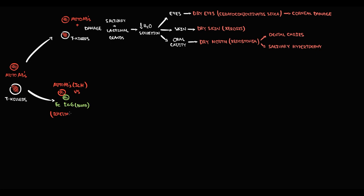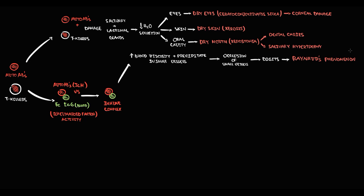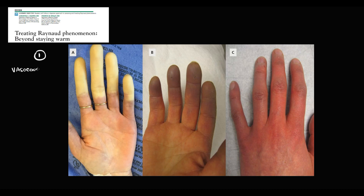Immune complexes are highly reactive substances and are responsible for systemic symptoms. First of all, immune complexes are proteins, and increasing protein concentration causes increasing blood viscosity. Also, these complexes can precipitate in small vessels. All these combined can cause occlusion of the small vessels of the digits, which can trigger Raynaud's phenomenon. The first step in Raynaud's phenomenon is vasoconstriction or occlusion of arterioles, causing decreased blood flow into the digits.